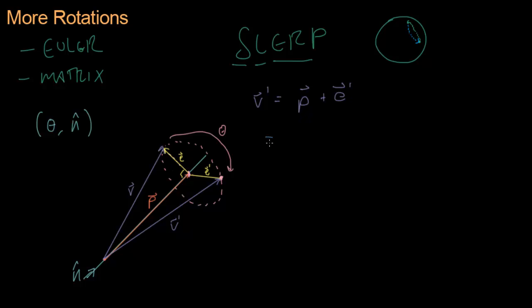We know how to do projections. That is V dot N times N. That's P. That's P right there.